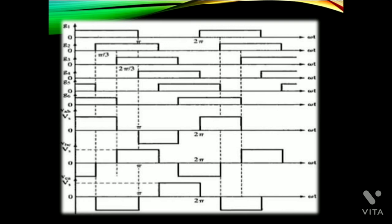These are the waveforms of gate triggering and the line voltages Vab, Vbc, and Vca.